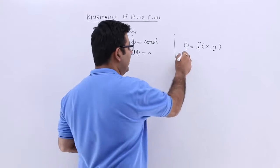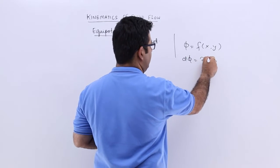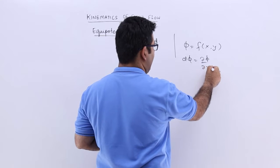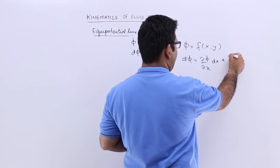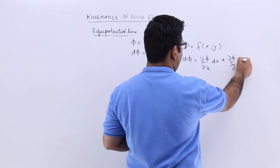So, if you differentiate phi, that is d phi, you get curly phi by curly x into dx plus curly phi by curly y into dy.